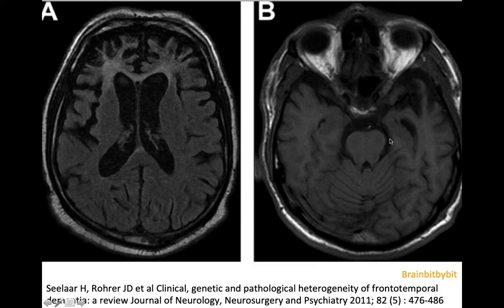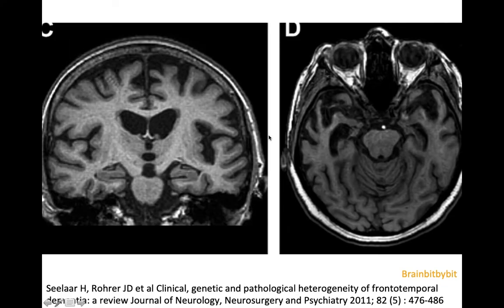There is dementia mainly affecting the temporal lobe, and if it is on the left side where speech is located, patients present with aphasia and there are different variants. There is a semantic variant where the atrophy is in the left inferior temporal gyrus, and then there is the non-fluent variant where the atrophy is in the superior temporal gyrus, the peri-insular region, and the frontal region on the left side.